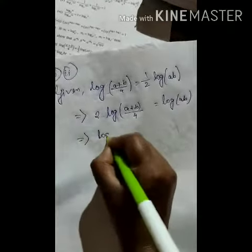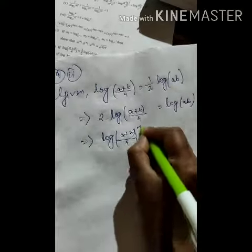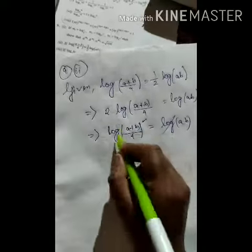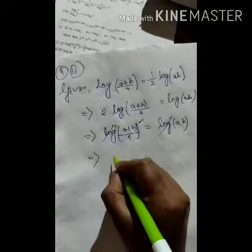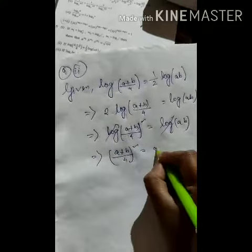Next, taking the 2 as a power out, we get log of [(a+b)/4]² and here log. The logs cancel, so [(a+b)/4]² equals ab.